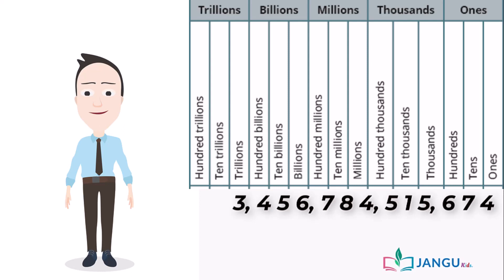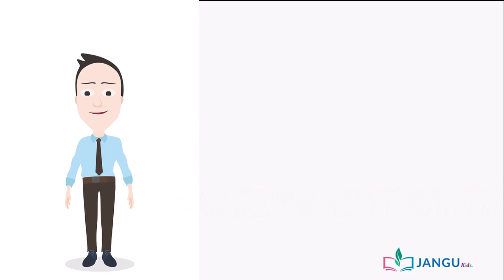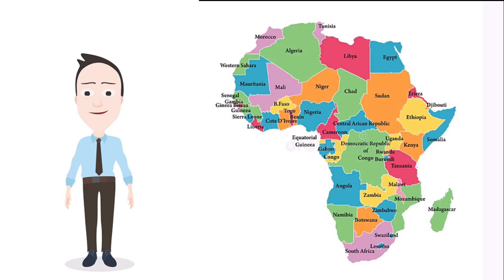Simply put, this big number is three trillion, four hundred and fifty-six billion, seven hundred and eighty-four million, five hundred and fifteen thousand, six hundred and seventy-four. That's great! Now the estimated population of Nigeria, Ghana, and Tanzania as at 2020 are shown on this map.